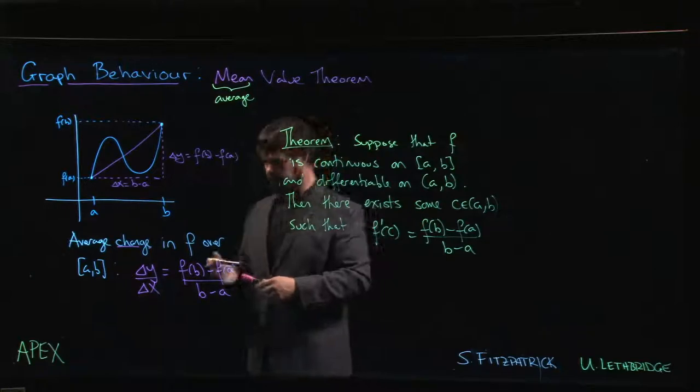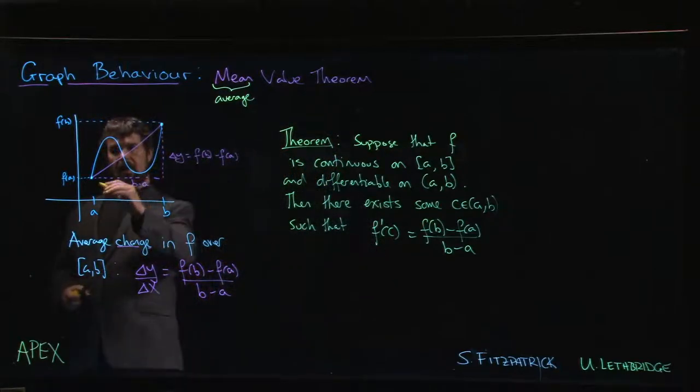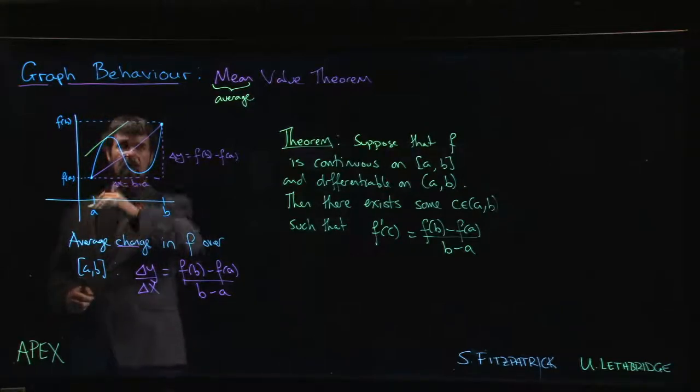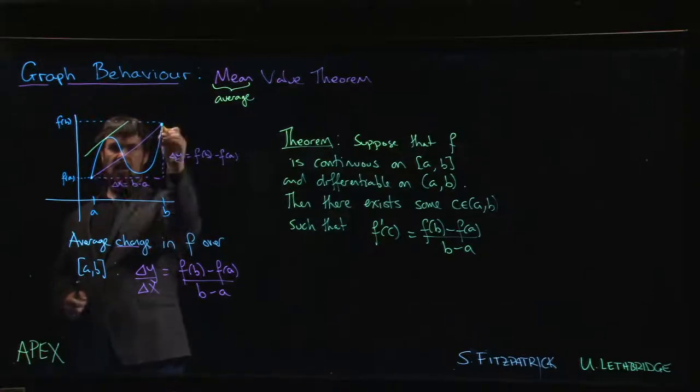We might have somewhere, like say here, where we draw the tangent line at that point and it's parallel to the line segment that goes between (a, f(a)) and (b, f(b)). In this case, there's actually two such points where the tangent line will be parallel.